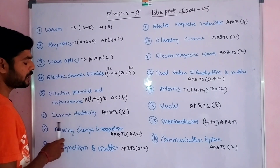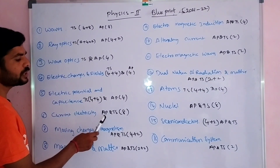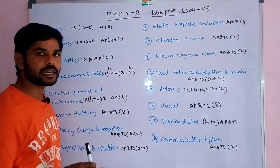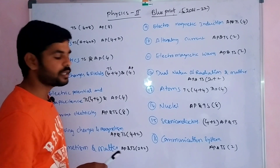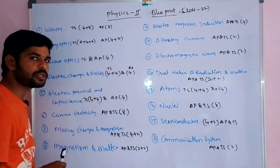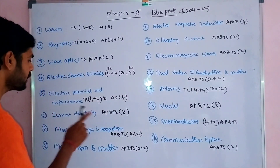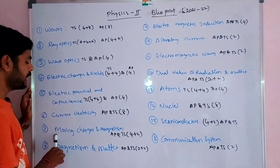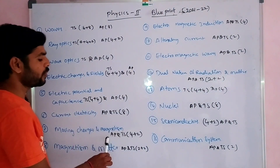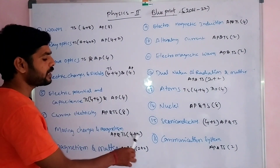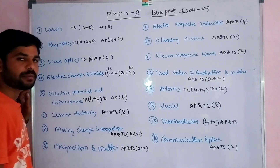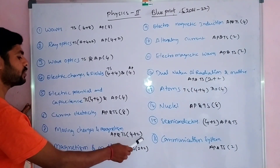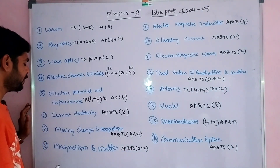For Current Electricity, both AP and Telangana have one 8-mark long answer question. For Moving Charges and Magnetism, both AP and TS have 4 marks plus 2 marks, giving 6 marks weightage in total.